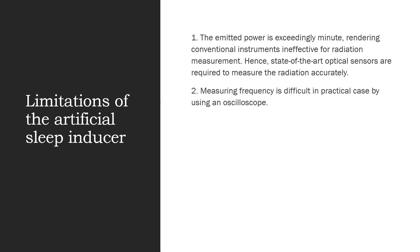Now let's discuss some limitations of an Artificial Sleep Inducer. One limitation is that the emitted power is very small, so conventional optical sensors cannot be used — state of the art optical sensors are required to measure the radiation correctly. Measuring frequency is also difficult in practical cases using an oscilloscope, which can escalate the size of the instrument, hence making it difficult for a person to use conveniently.